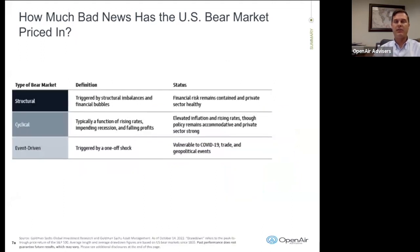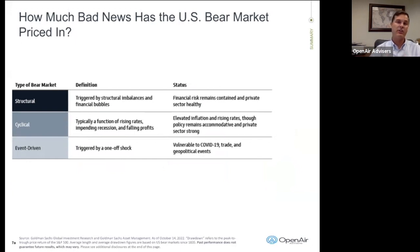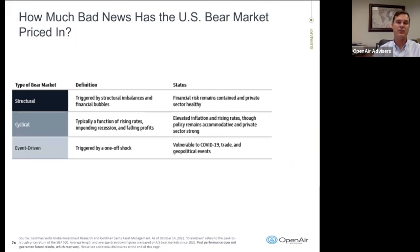To define this a little better, there are basically three types of bear markets: structural, cyclical, and event-driven. Structural are triggered by imbalances and financial bubbles. Cyclical is the one that really is defined well by what's going on in the market today — it's typically a function of rising rates, an impending recession, and falling profits. The status is elevated inflation, rising rates, though policy remains accommodative, and the private sector is still strong. That's the closest definition to what we have today.